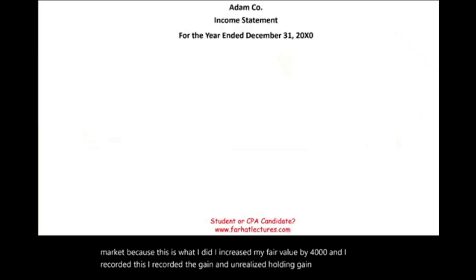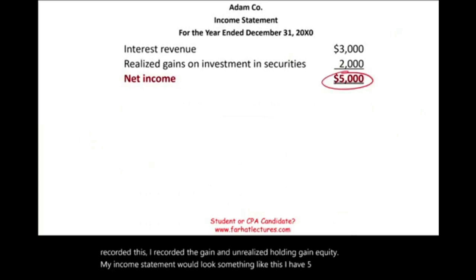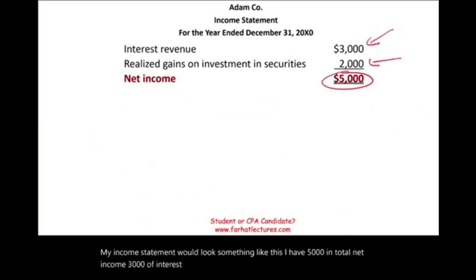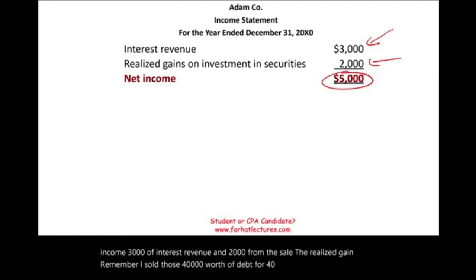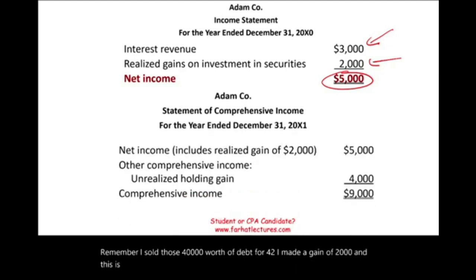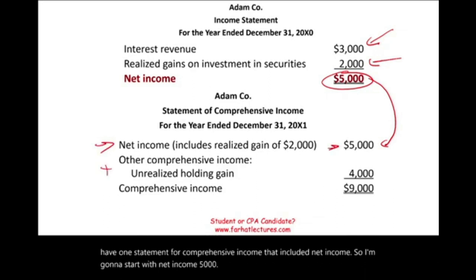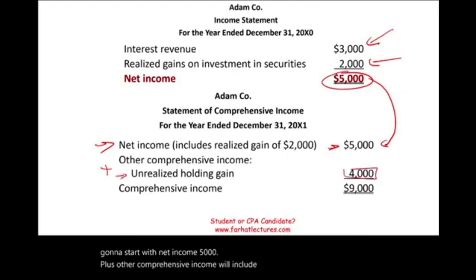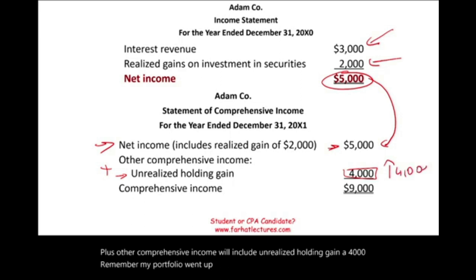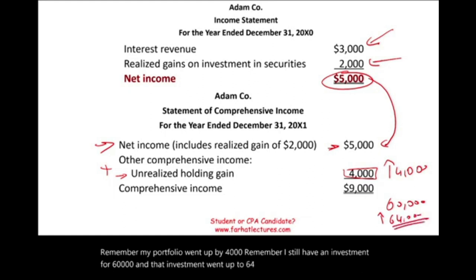The income statement shows total net income of $5,000: $3,000 interest revenue plus $2,000 realized gain from the sale. The statement of comprehensive income starts with net income of $5,000, then adds other comprehensive income — the unrealized holding gain of $4,000 — for total comprehensive income of $9,000. The $4,000 unrealized gain is recorded in other comprehensive income.